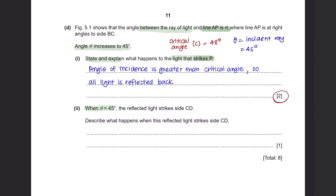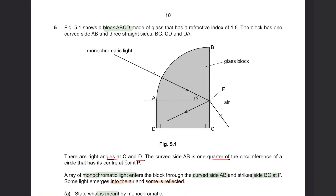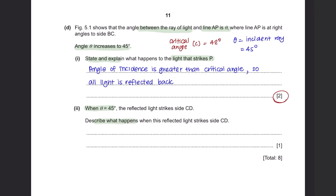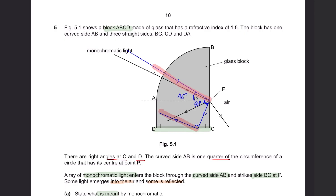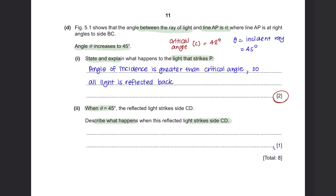Part 2: When theta equals 45 degrees, the reflected light strikes side CD. The angle of theta is 45 degrees, so it is also reflected at an angle of 45 degrees, giving a 90-degree angle at the corner. The light that strikes side CD will be reflected back. The light reflected back will be perpendicular to the light being reflected in.